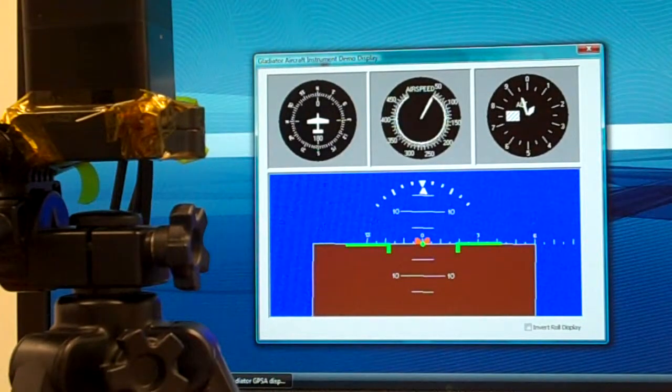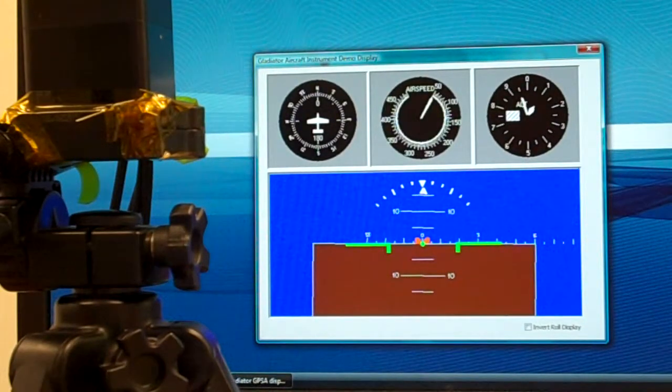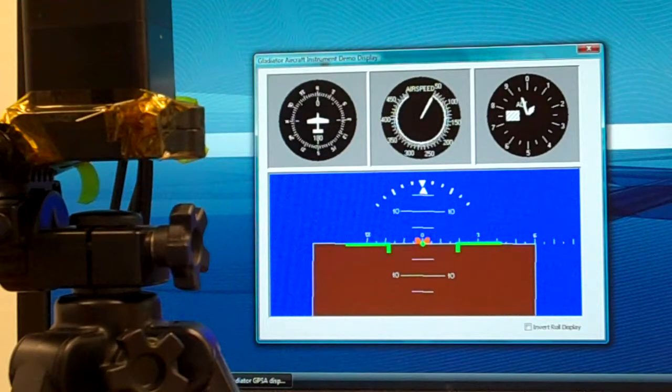Now that you have your aircraft instrument display, turn on your battery pack. After 10 seconds of not moving the unit, we can begin.